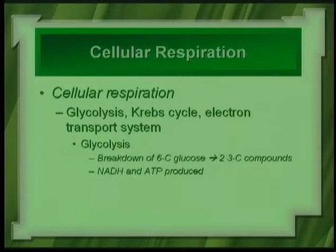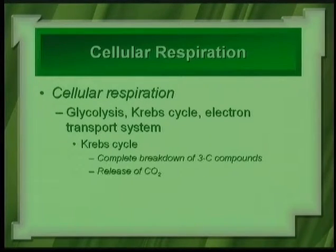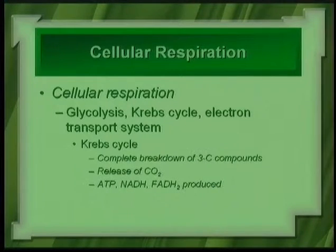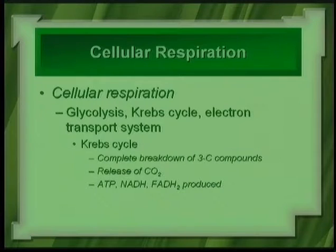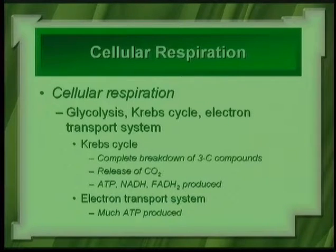During glycolysis, NADH and ATP are produced. During the Krebs cycle, you have the extended and complete breakdown of those three-carbon compounds, with the release of carbon dioxide gas. You also have the generation of ATP, NADH — a related compound to NADPH, but used in cellular respiration — and another electron carrier called FADH₂. NADH and FADH₂ ferry electrons over to the electron transport system, where most of the ATP is produced.